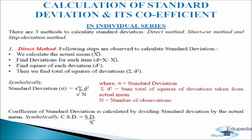First we will discuss the direct method. The following steps are observed: first, calculate the actual mean; second, find deviation from each item — d = x minus mean; third, find the square of each deviation, d²; and last, find the sum total of squares of deviation, σd². The formula is: standard deviation = √(σd² / n), where σd² is the sum total of squares of deviations taken from the actual mean and n is the number of observations.